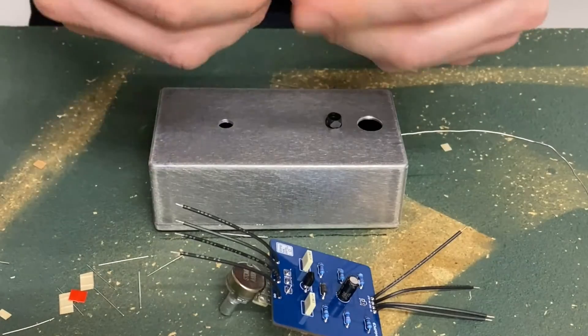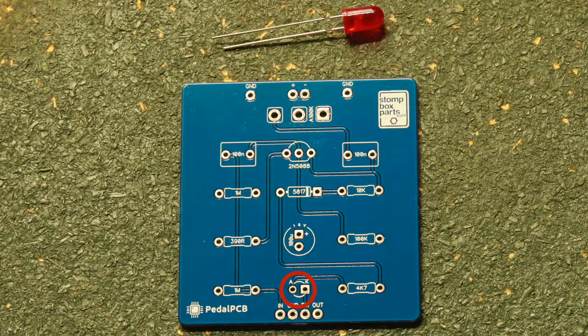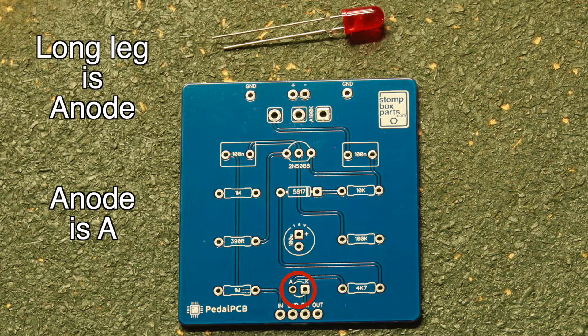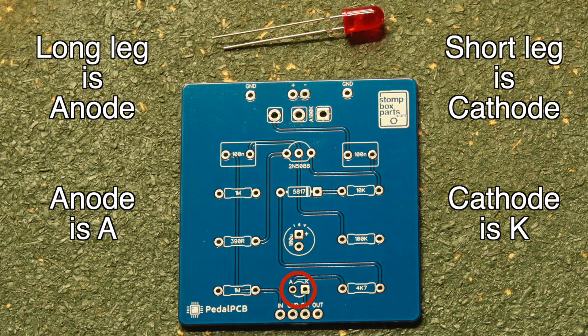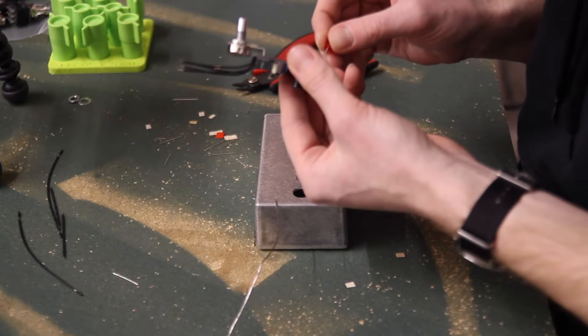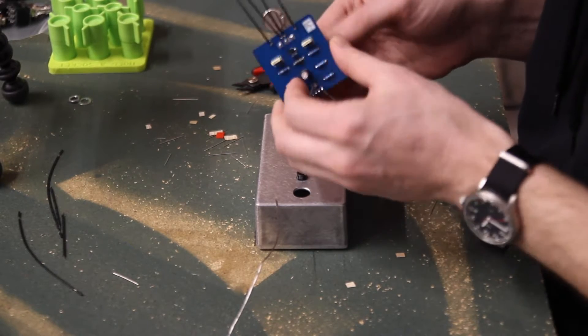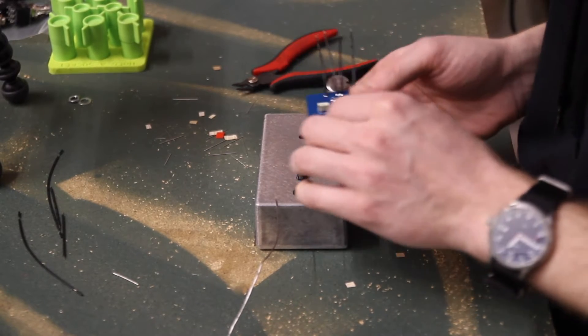Now grab the LED bezel and push it through the hole for the LED from the inside of the enclosure. Find the LED. This part has polarity. The long leg of the LED is the anode and goes to the A mark on the PCB. The short leg is the cathode and goes to the K mark on the PCB. The cathode side is also slightly flattened on the rim of the LED.